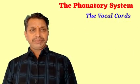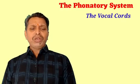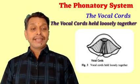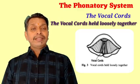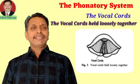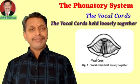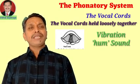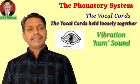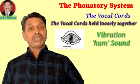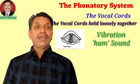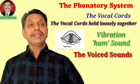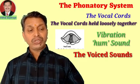The second situation of the vocal cords is 'vocal cords held loosely together.' When the vocal cords are held loosely together, a narrow gap is created in the glottis. Due to that narrow gap, when air escapes through the glottis, there is vibration in the vocal cords. When there is vibration in the vocal cords, a hum sound is naturally produced, and due to the hum sound production, sounds become voiced. So in this situation, sounds produced are known as voiced sounds.